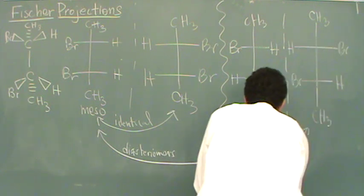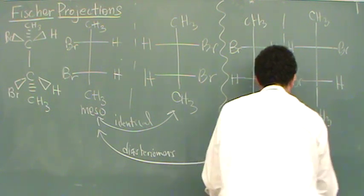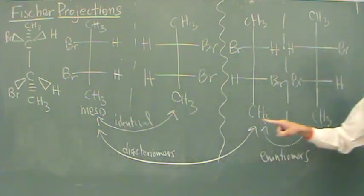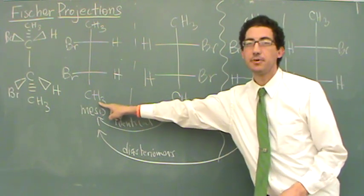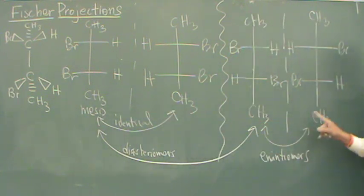These are called diastereomers. So this one to this one is a diastereomer. This one to this one is a diastereomer. This to this is identical, they're the same. And this to this is called an enantiomer.